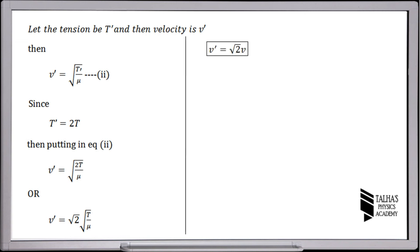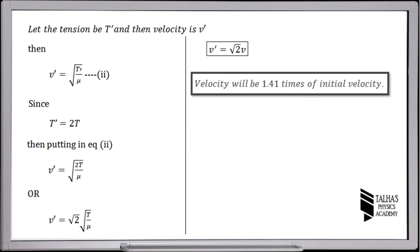So, v prime is equal to under root 2 times v. In this way we can say that the velocity will be 1.41 times the initial velocity.